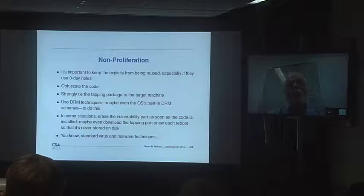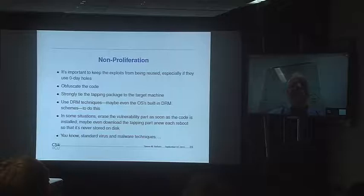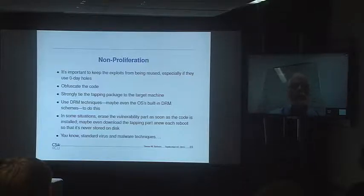We are worried about proliferation — once these exploits are out there in the wild, somebody might reuse them. The answer is to obfuscate the code, a standard technique. You want to strongly tie the tapping package to the target machine. Use serial numbers, disk MAC addresses, registry keys — things already lying around the computer — and use that to encrypt part of the tapping package.